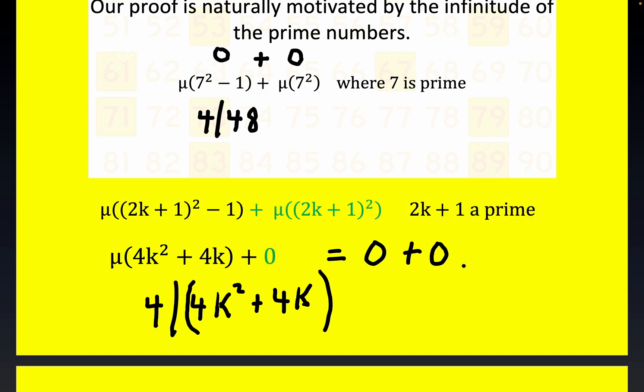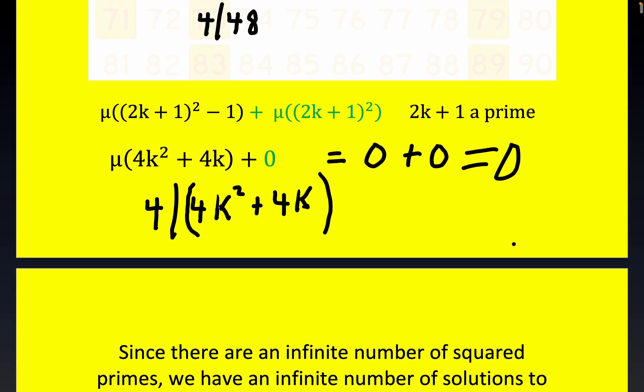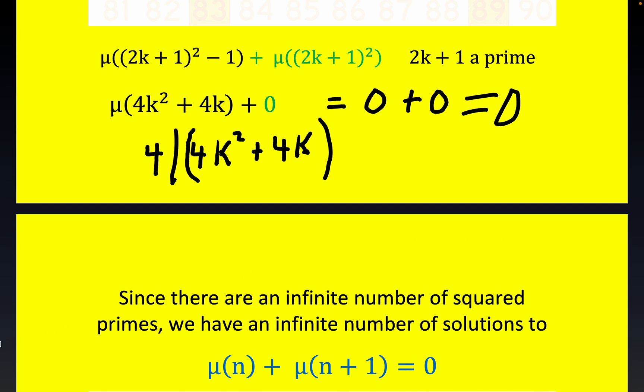And so this is equal to zero. So really this completes the proof because if you take right here, if you take n to equal (2k+1)² - 1, then that's going to be a solution to this, because n plus one is just this.